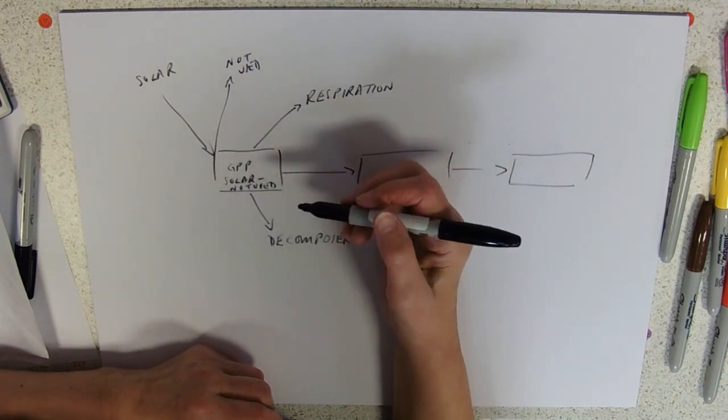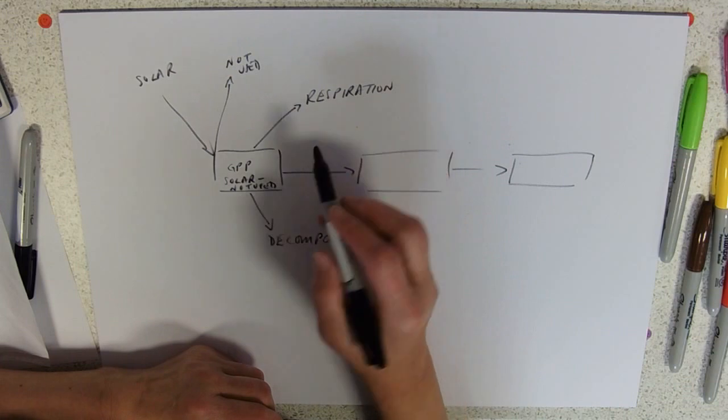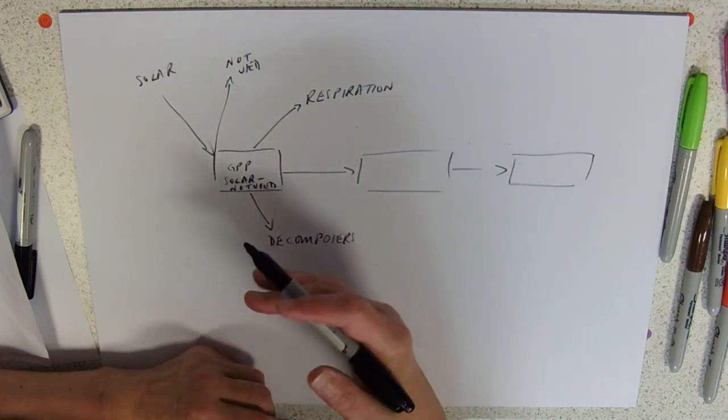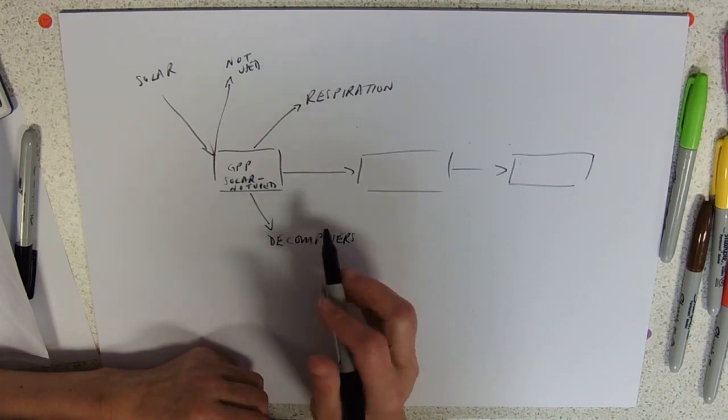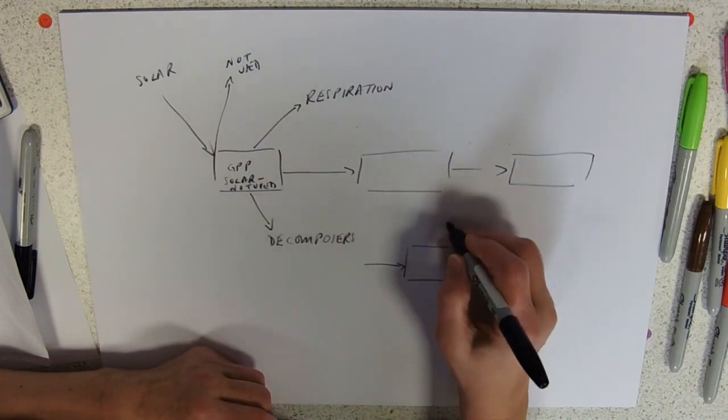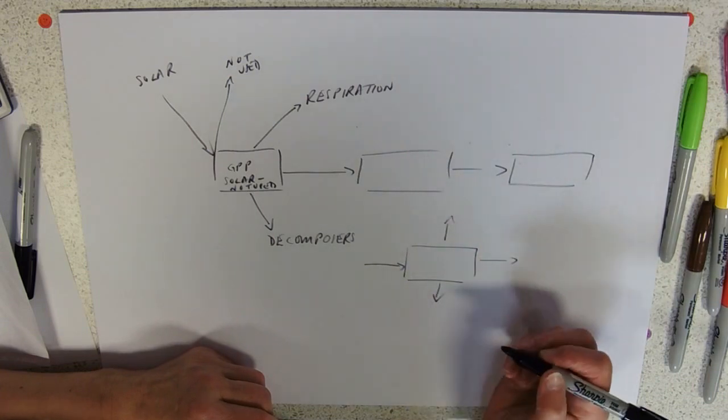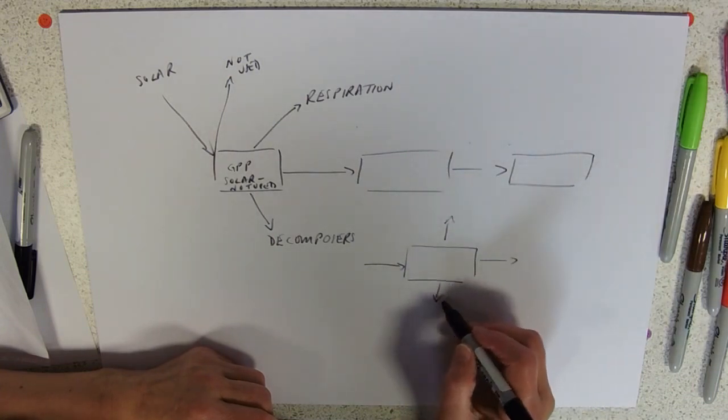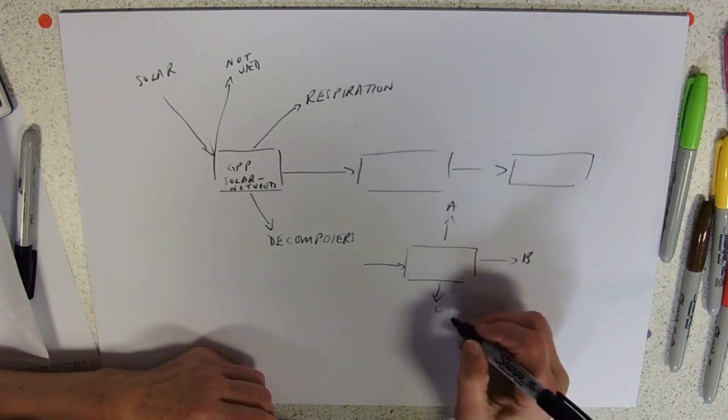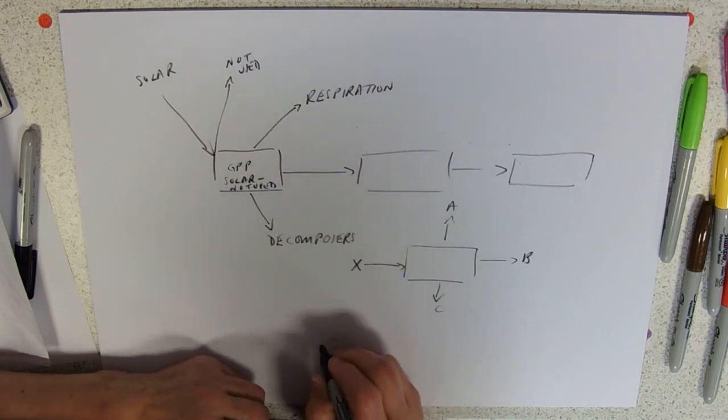Which allows you then to work out what can be passed on to the next level, what has been passed on to the next level. If you've got these kind of boxy diagrams with an in and some outs, remember that all of those three arrows, so A, B, and C, have to add up to what's going in.